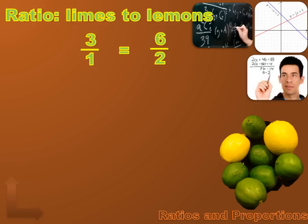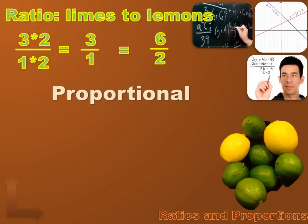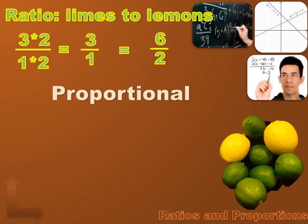Because three to one equals six to two. Going from three to one to six to two, I've increased the numerator by two times and the denominator by two times — I've grown the top and bottom proportionately. So my two ratios are proportional. If I have two ratios that are equal, they're said to be proportional. Three is to one as six is to two.